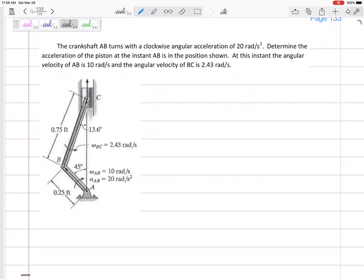Alright, so let's look at this one. Crankshaft AB turns with a clockwise angular velocity of 20 radians per second and angular acceleration of 20 radians per second squared. Determine the acceleration of the piston at the instant AB is in the position shown. At this instant, the angular velocity of AB is 10 radians per second.